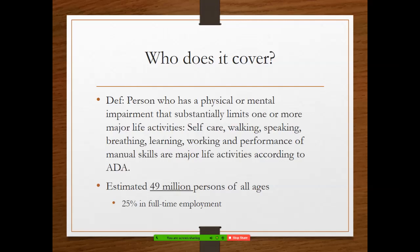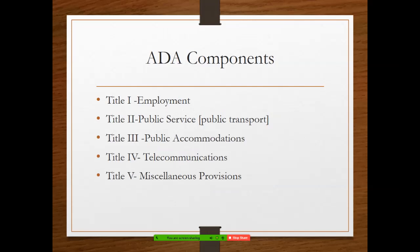There are five components to the ADA law. I don't expect you to memorize all of them, but just know that there are five — it's a big law. There's a section covering employment, public service, public accommodations, telecommunications — which of course has been totally changed with cell phones, though remember in 1990 we didn't have cell phones — and then miscellaneous provisions.